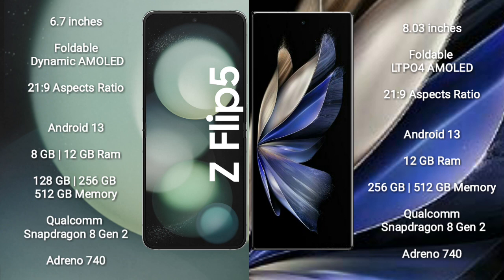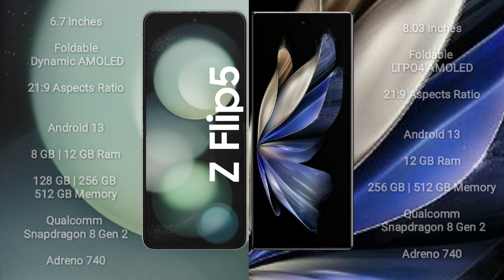Samsung Galaxy Z Flip 5 comes with 8GB RAM and 128GB to 512GB internal storage, powered by a Qualcomm Snapdragon 8 Gen 2 processor and Adreno 740 GPU. Vivo X Fold 2 comes with 12GB RAM and 256GB to 512GB internal storage, also powered by a Qualcomm Snapdragon 8 Gen 2 processor and Adreno 740 GPU.